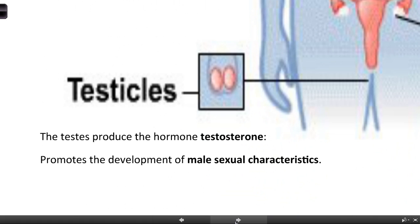The testicles produce a hormone called testosterone. Testosterone plays a very important role in the development of male secondary sexual characteristics. Basically, as you're developing as a male, features like being slightly larger, having a deeper voice, a hairy chest - all those secondary features that you can use to distinguish a male from a female - are largely due to the amount of testosterone circulating around the body.